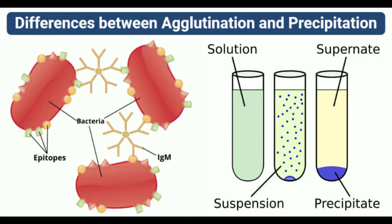Immunological techniques like immunodiffusion and electromonodiffusion utilize the principle of precipitation reactions. The principle of precipitation is also applied in analytical chemistry for the detection of various functional groups of chemical substances. If a lighter precipitate is formed, another process termed flocculation takes place.